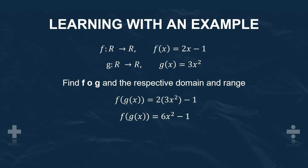The question is to find FOG and the respective domain and range. We need to find f of g of x. I've replaced any x in the equation of f of x with the equation g of x — I've popped 3x squared wherever we see an x in the f of x equation. This turns out to be 2 times 3x squared minus 1, which simplifies down to 6x squared minus 1.